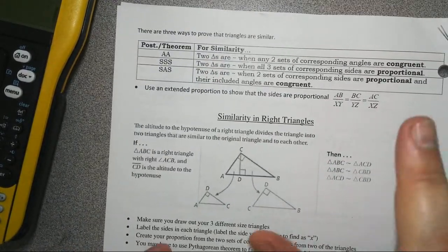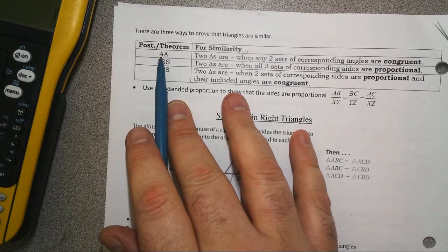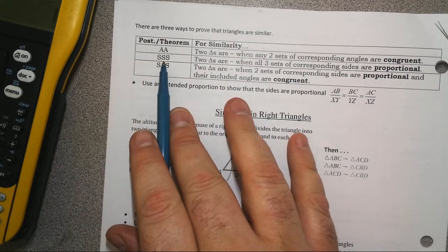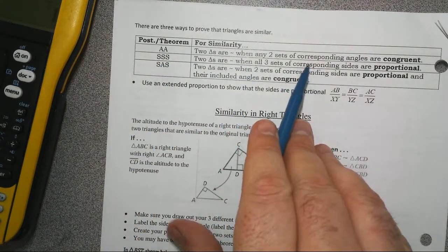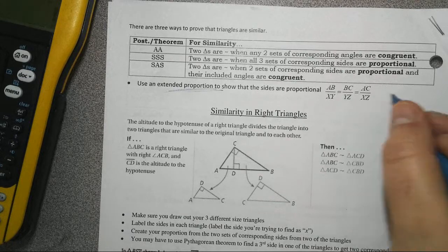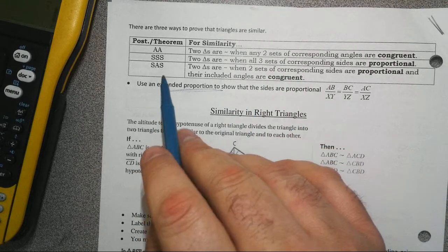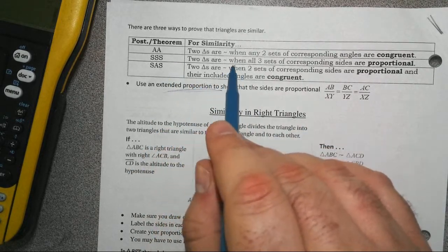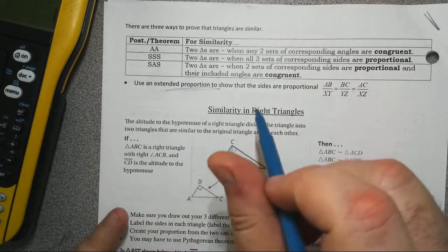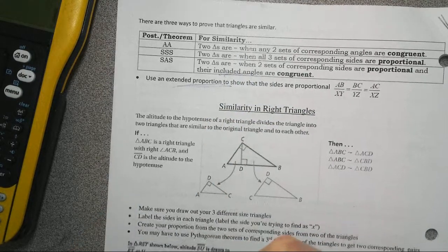For similarity questions, determine whether triangles are similar and state the theorem. There are three theorems: Angle-Angle — if you have no side lengths, use two pairs of congruent angles. Side-Side-Side — all three sides are proportional; create an extended proportion showing they equal the same number. Side-Angle-Side — one congruent included angle with the two sides touching it being proportional.